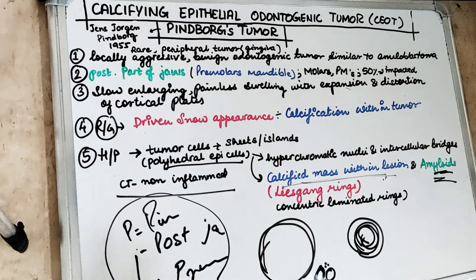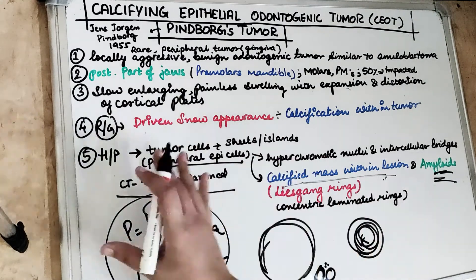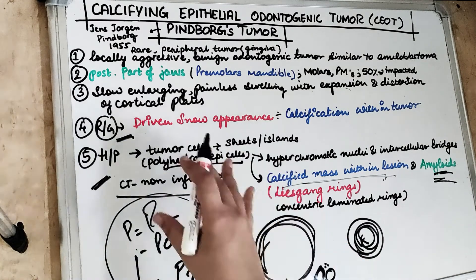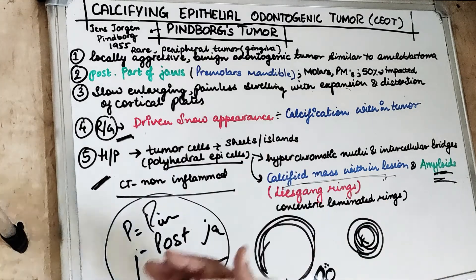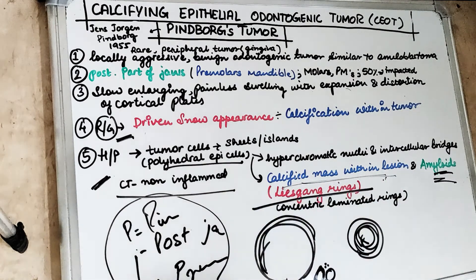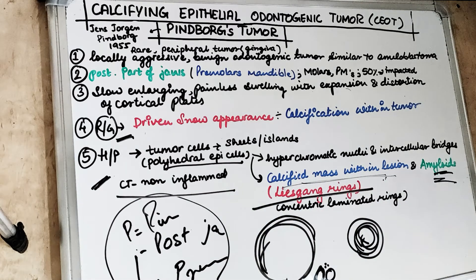To summarize: radiographically, we see calcification within the tumour producing a driven snow appearance within the radiolucency. Histopathologically, the tumour cells have calcified masses — the Liesegang rings — which are hematoxylinophilic concentric laminated rings around degenerated tumour cells. This is the calcifying epithelial odontogenic tumour, also known as the Pindborg tumour after J.J. Pindborg.